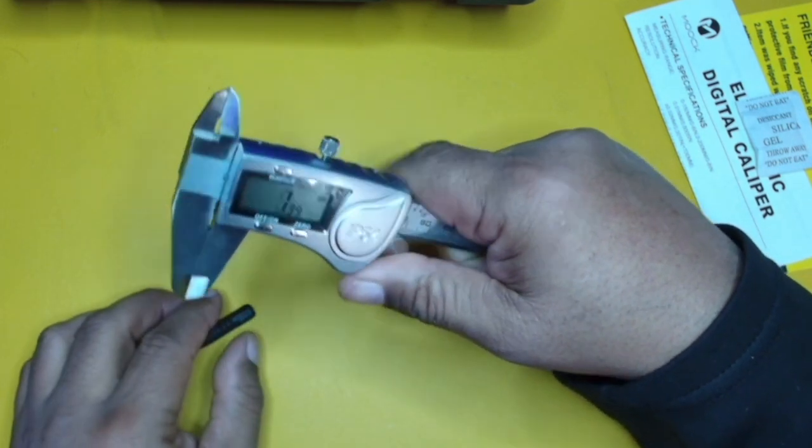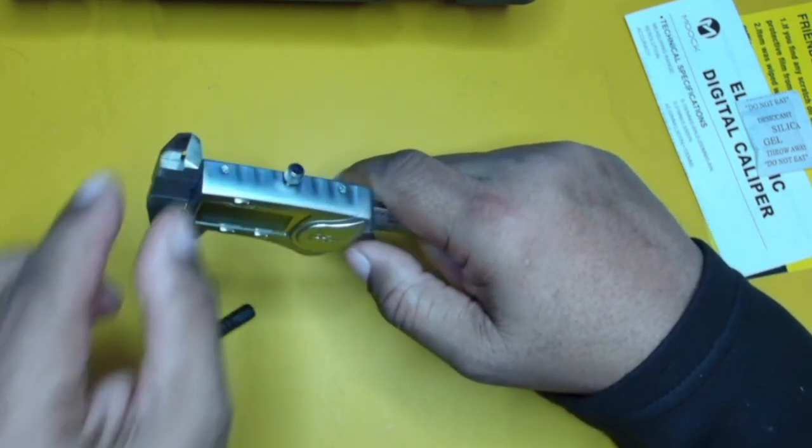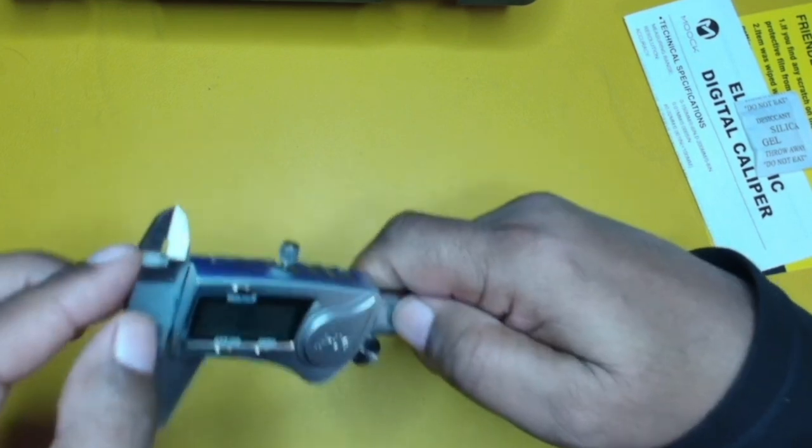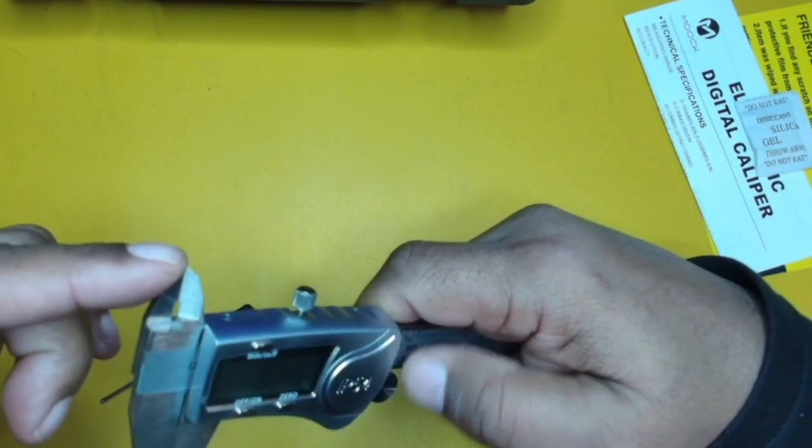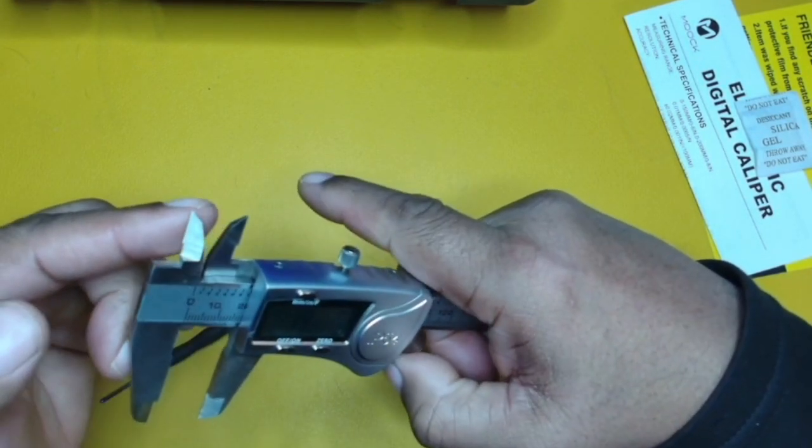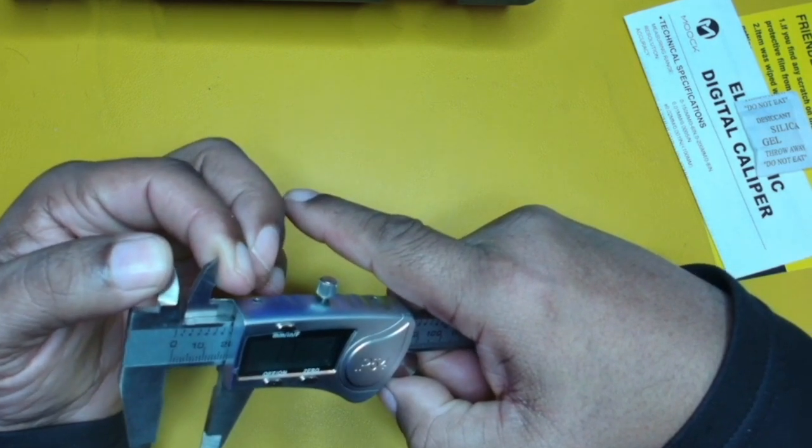Now, if you wanted to measure something interior, the inside of something, you actually use these little prongs here on this side. So those are going to spread out like so, and then you would measure something from here.